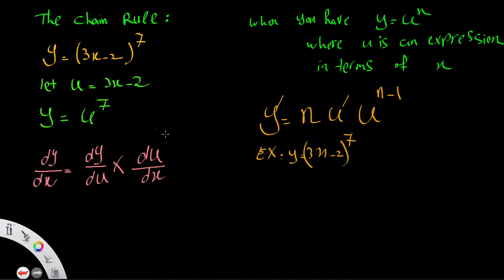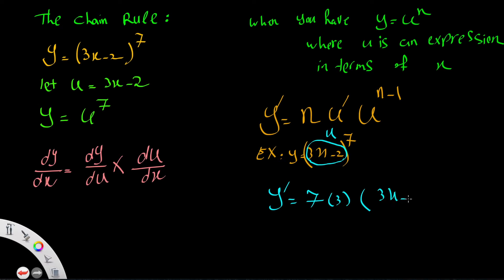Now let's apply this formula to differentiate (3x minus 2) to the power of 7. Bring down the power 7, then multiply by u prime — the differentiation of (3x minus 2) is 3 — so we get 7 times 3 times (3x minus 2) to the power of 6, which equals 21(3x minus 2) to the power of 6.